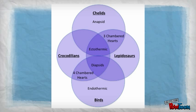And as you all know, Lepidosaurs, Chelids, and Crocodilians are all ectothermic, or cold-blooded, while birds are endothermic, or warm-blooded. So here's how they all fit together.